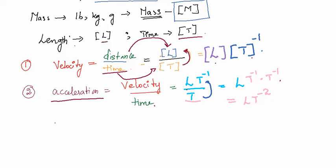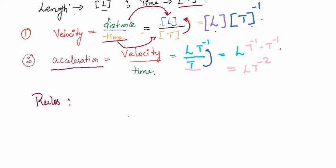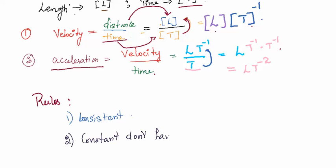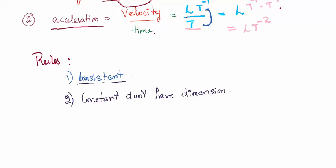Before going into examples, let me explain the rules of dimensional analysis. They are very simple. First, you have to be consistent — dimensions on both sides of an equation must match. Second, constants do not have dimensions. We'll see what consistency means in practice and how dimensionlessness helps us understand and validate formulas.